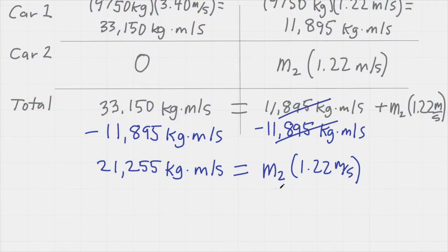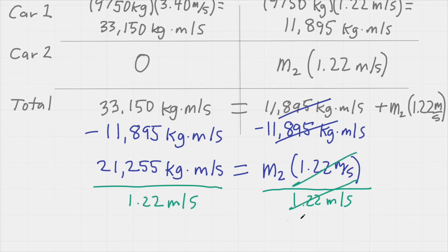So to solve for m2, I need to divide both sides of the equation by 1.22 meters per second. That will cancel on the right hand side. And then all I need to do to solve for m2 is divide 21,255 kilogram meters per second by 1.22 meters per second.